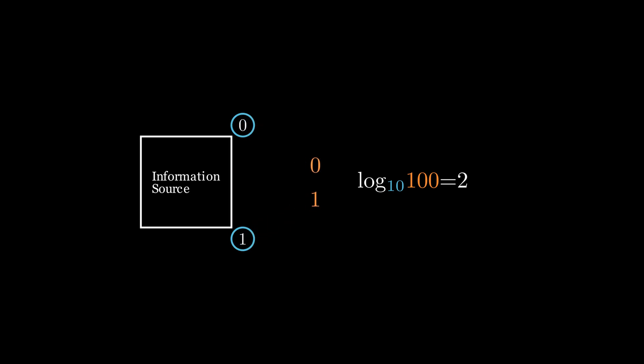After using it once, we get 1 binary digit of information, commonly referred to as 1 bit of information, 2 bits after using it twice, and 3 after a third usage.